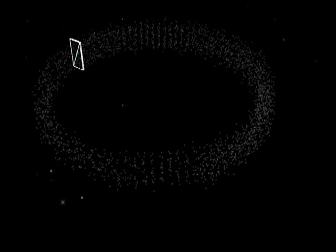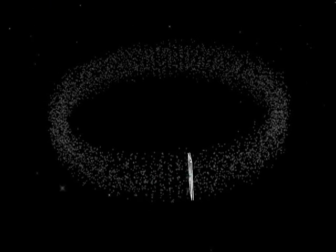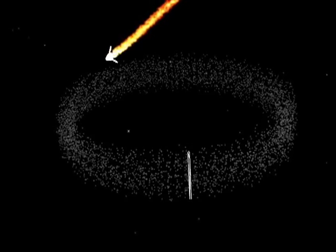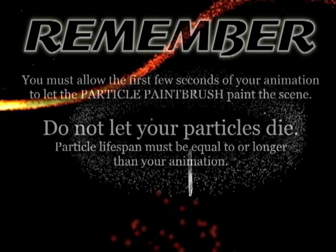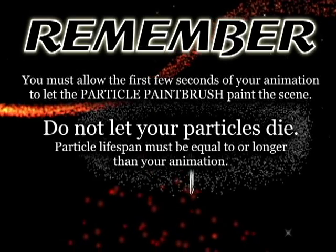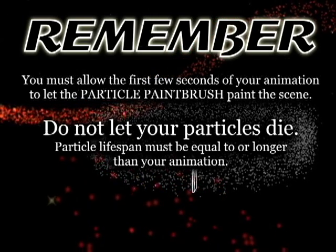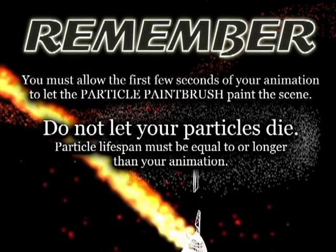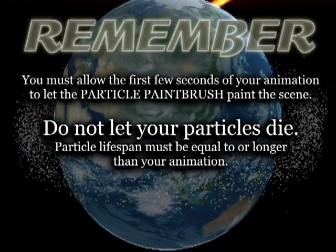This will make the particle travel 3 times around the path. This is what your particle looks like in action. Notice that the final path position is set to 300 instead of 100 to go around 3 times. Remember, you must allow the first few seconds of your animation for the particles to kick in and for the paint strokes to occur. Also, do not let your particles disappear.